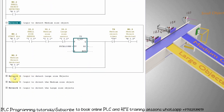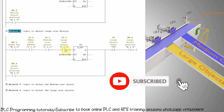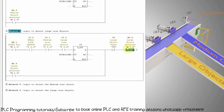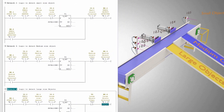In network four we have written the logic to detect the large size object. We insert the normal open contacts of all three sensors in series, so when a large object comes in front of the sensors all sensors turn on, starting the 100 millisecond timer T3. Once this timer is over it will latch on M0.4 to indicate detection of the large size object. Networks five and six contain the logic to sort small, medium, and large objects, which we will discuss in part two. Next we will download the program into the PLC and monitor the ladder logic.